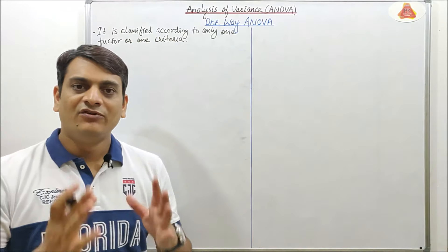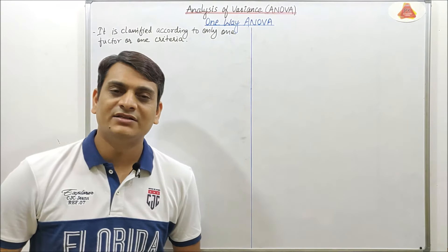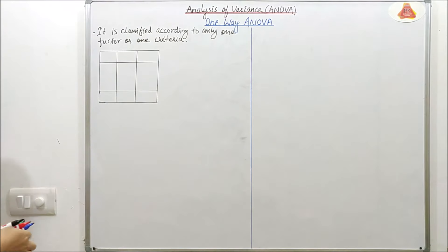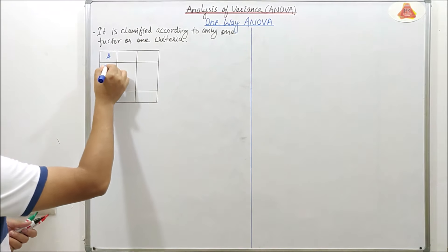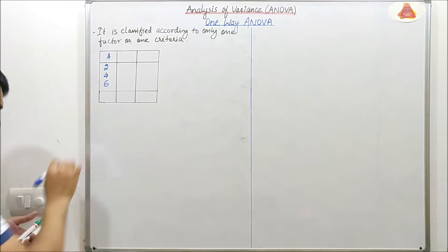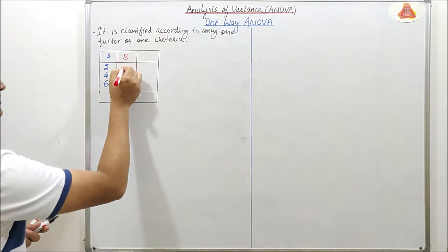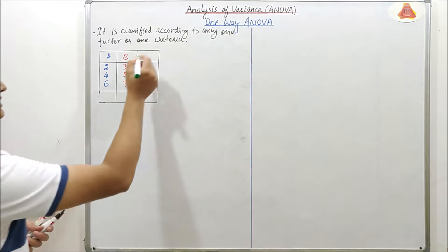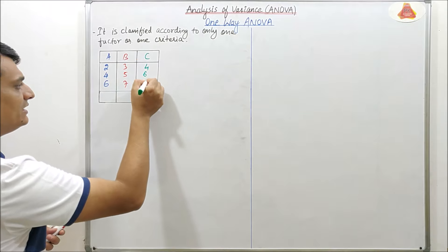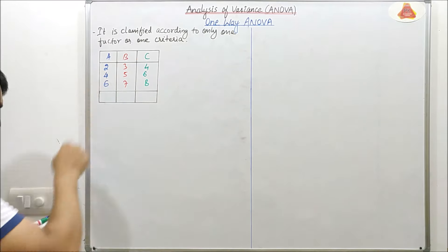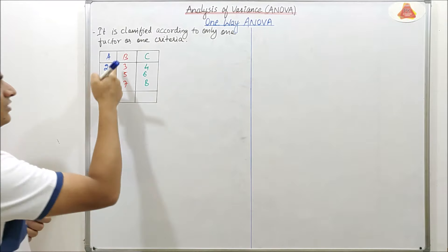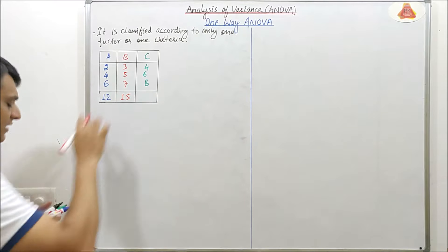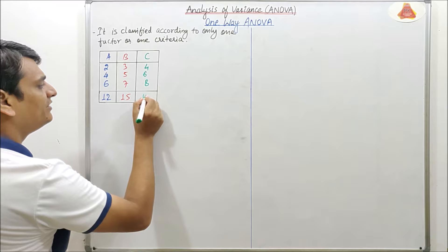Now coming to the steps involved in one-way ANOVA. To explain these steps, we will take an example. We have three samples: A, B, and C. Sample A has readings 2, 4, and 6 — total 12. Sample B has 3, 5, and 7 — total 15. Sample C has 4, 6, and 8 — total 18.